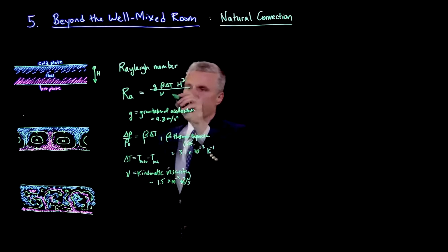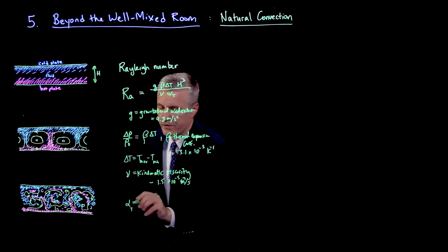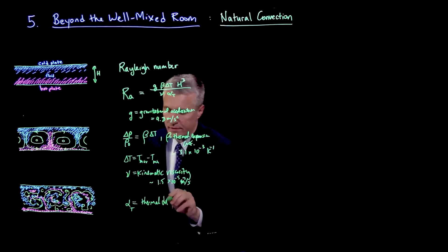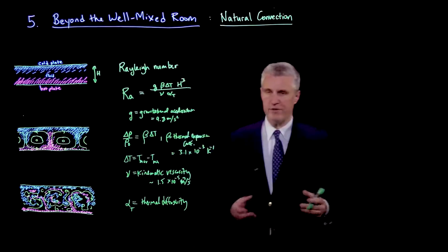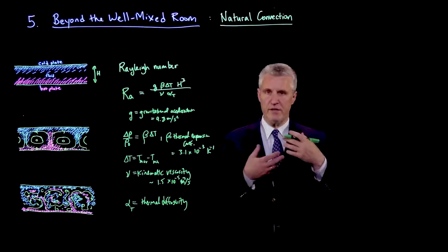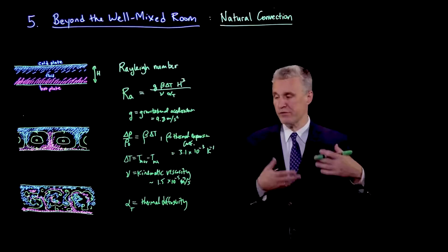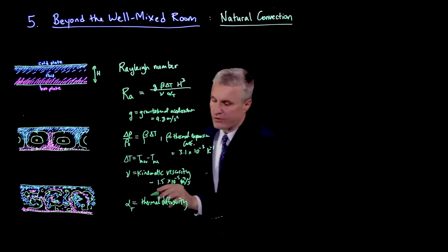And then finally, we have alpha_t, which is the thermal diffusivity. This parameter gives a sense of how quickly heat energy is transmitted by conduction and diffusion through the fluid.